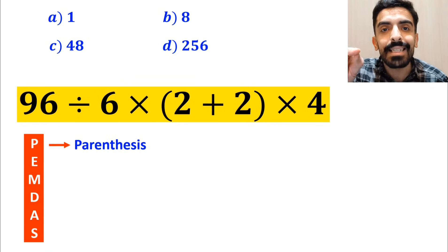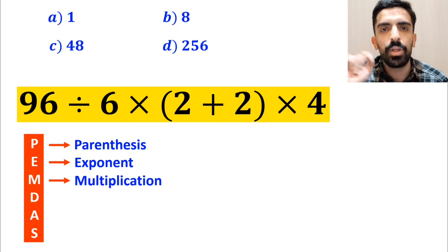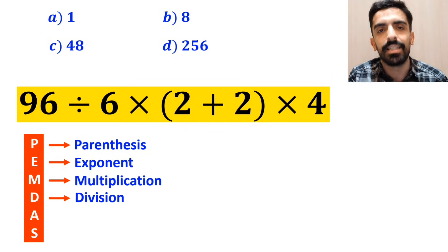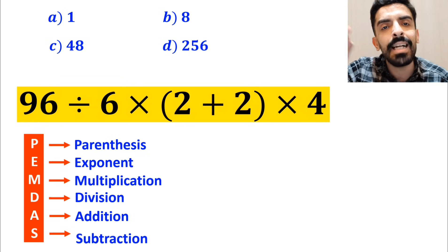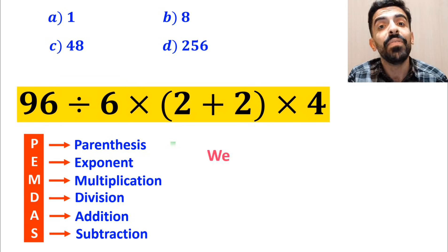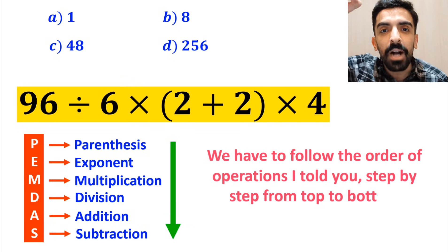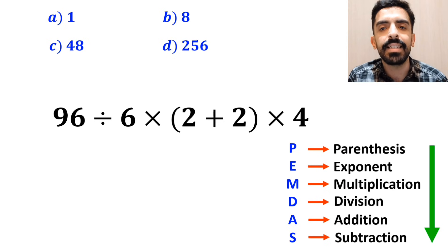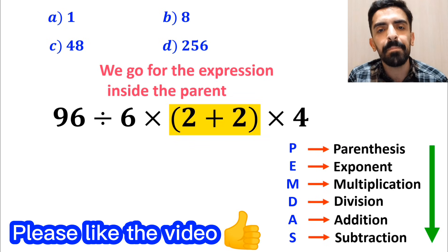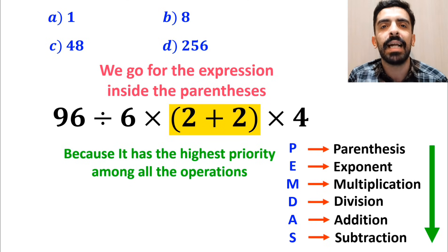In PEMDAS: P stands for parenthesis, E stands for exponent, M stands for multiplication, D stands for division, A stands for addition, and S stands for subtraction. We have to follow the order of operations step by step from top to bottom. The first step is to go for the expression inside the parenthesis because it has the highest priority among all the operations.